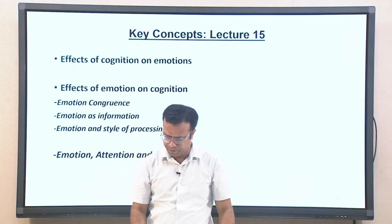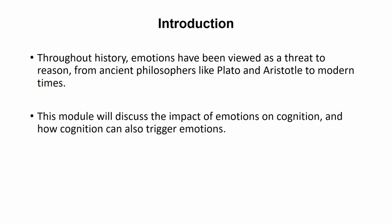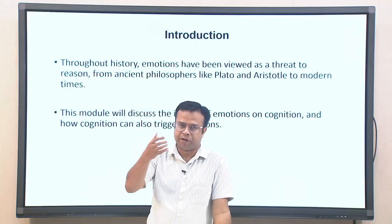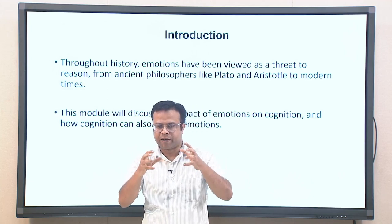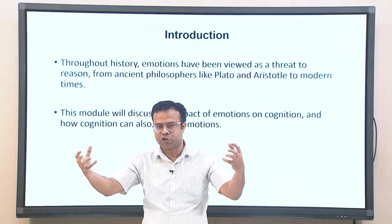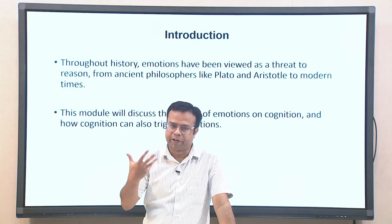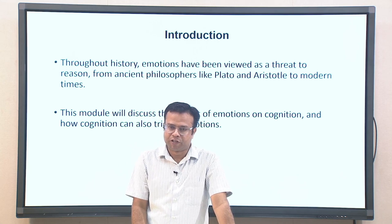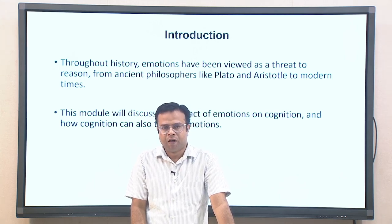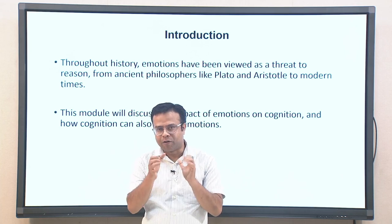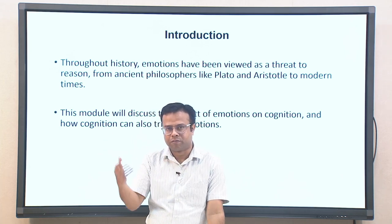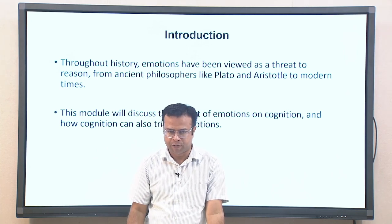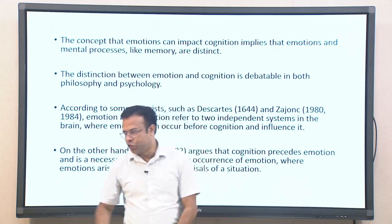Throughout history, emotions have been viewed as a threat to reason. There is a general idea that when people are emotional, their rational part is not functional — they are not able to think properly. Rationality and emotionality are seen as unable to coexist, an approach taken from ancient philosophers like Plato and Aristotle to modern times. We will try to see what truth lies behind this.